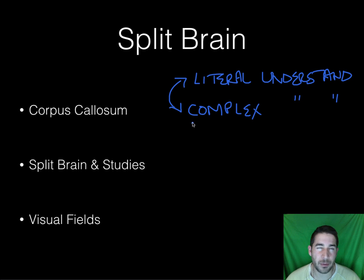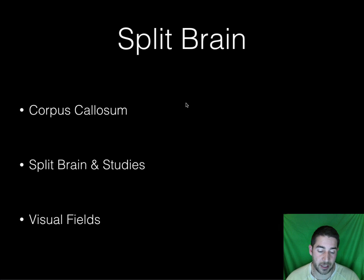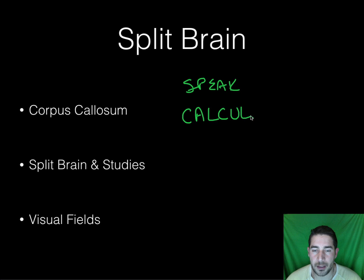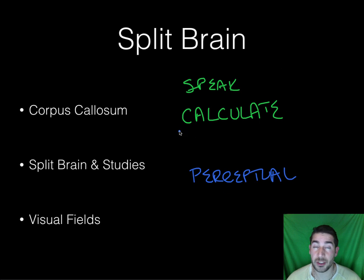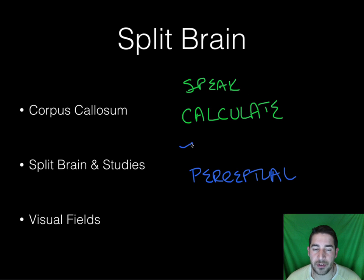There are different sides that are more prominent in certain things, but they're always working in tandem. The left side handles language — your language area is in your left side. Your left side is good for speaking and calculating. Your right is more for perceptual tasks. A lot of times when people are good at art we say they're right-brained, and when good at analytics, left-brained, which isn't really accurate. Different areas are good at different things, but it's all working together.